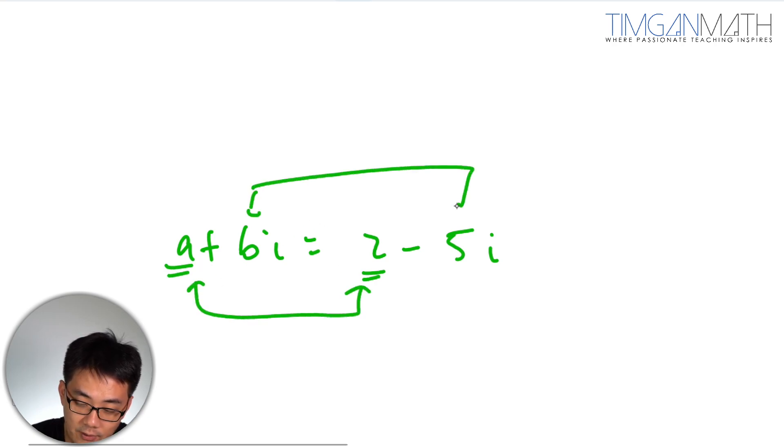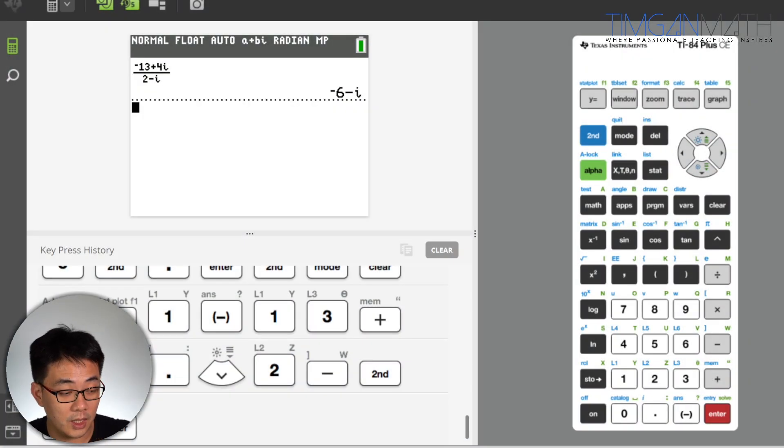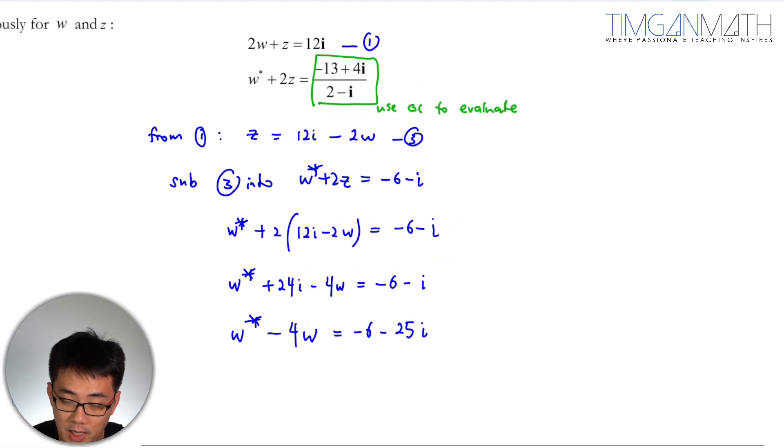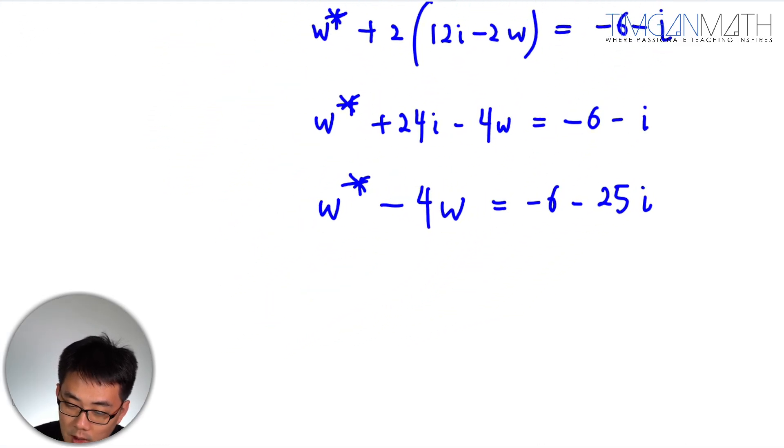But if they are not real, you cannot just compare. You can only compare when they are in the most fundamental form. So here what do we do? Now, whenever you see there's a conjugate, W and W conjugate exist together, they are the same complex number but same same but different. What you need to do is, only when they exist together in the same equation, you just let W equals a plus bi.